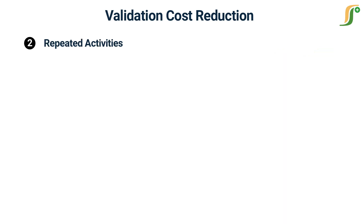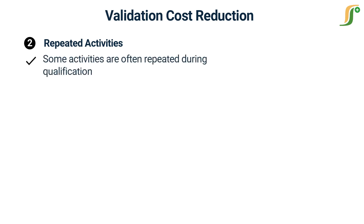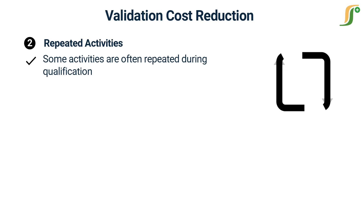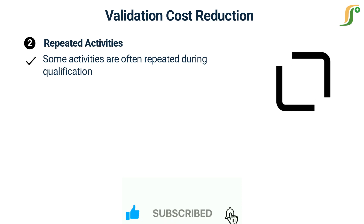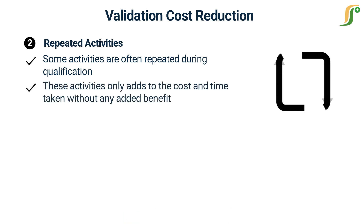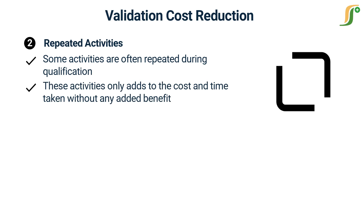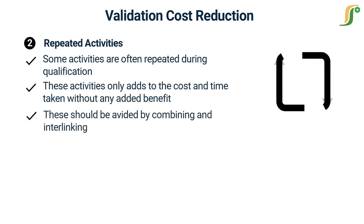The second factor is repeated activities. Certain activities are often repeated during qualification; such duplication occurs during commissioning to ensure safety and quality, but in reality it only adds to cost and time without any added benefit. Procedures that are repetitive in nature can be carefully analyzed and avoided by combining interlinked processes and ensuring a proper communication channel between the concerned authorities.